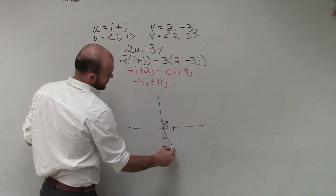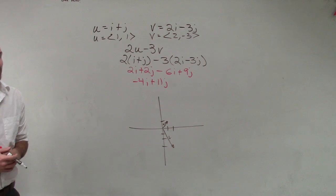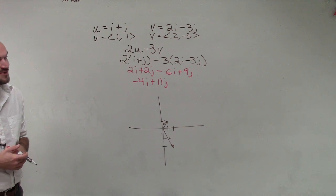Then we have v is at 2 comma negative 3. 1, 2, 1, 2, 3. So we have u and v.